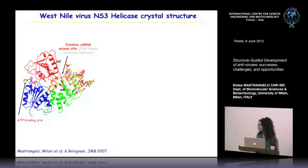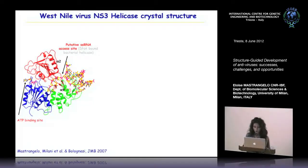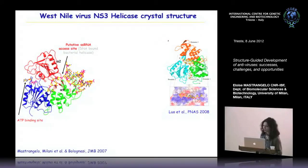We modeled the binding of the helicase domain to a double-strand RNA using superposition of our structure with a DNA-bound bacterial helicase. In this model, the putative single-strand RNA access site is located between alpha helix 2 in domain 2 and alpha helix 9 in domain 3. This model was confirmed one year later by Julien Descartes, who solved the structure of dengue virus in the presence of single-strand RNA and an ATP analog, showing single-strand RNA entering between these two alpha helices.